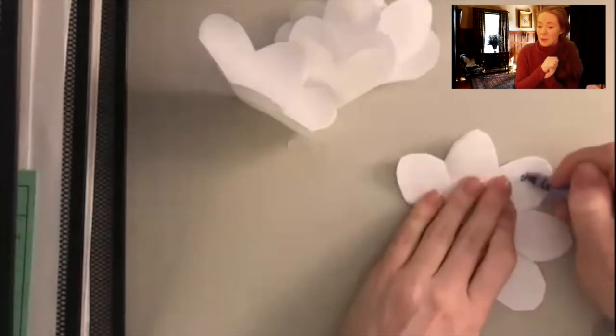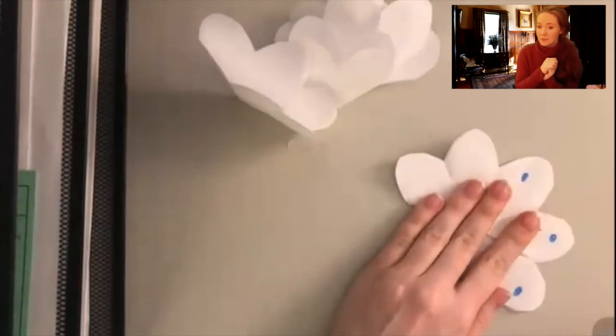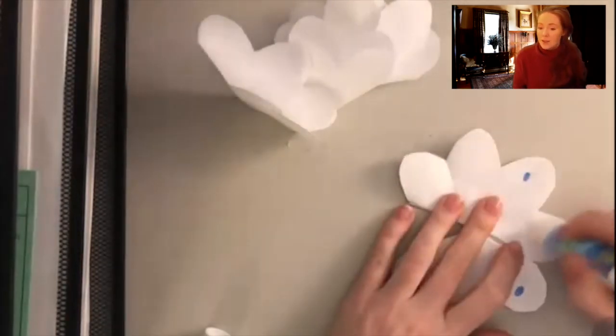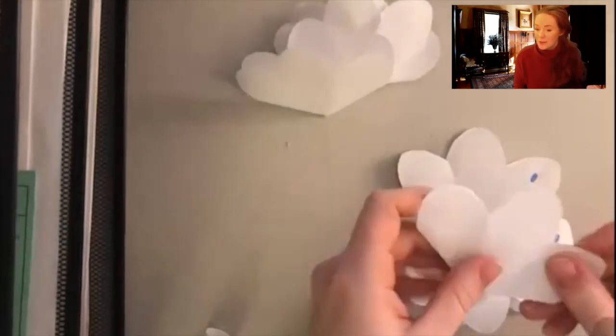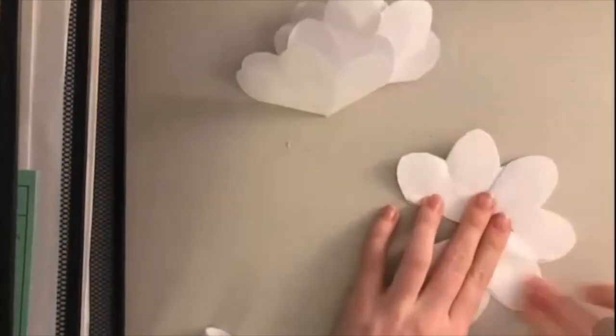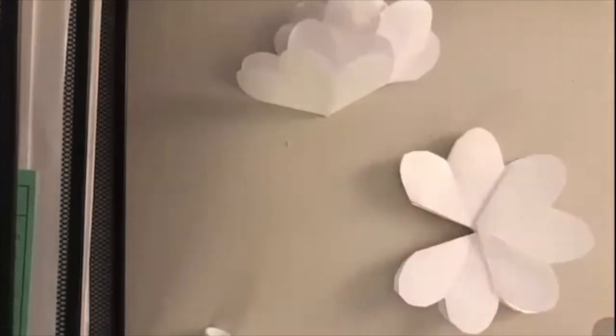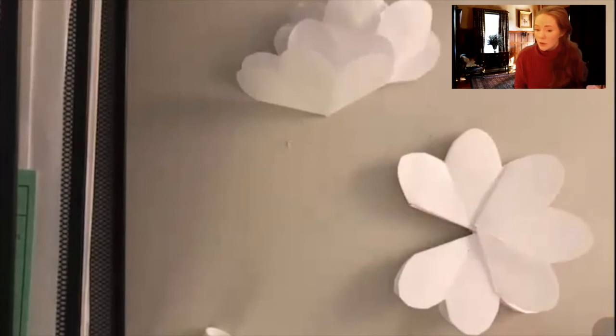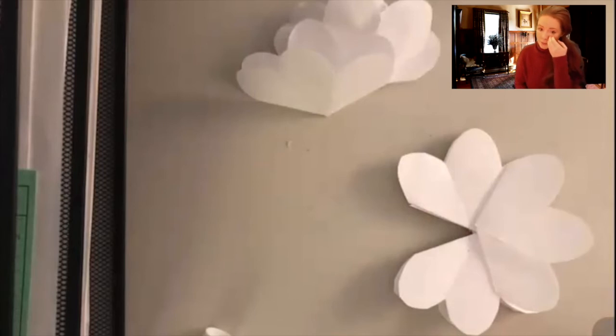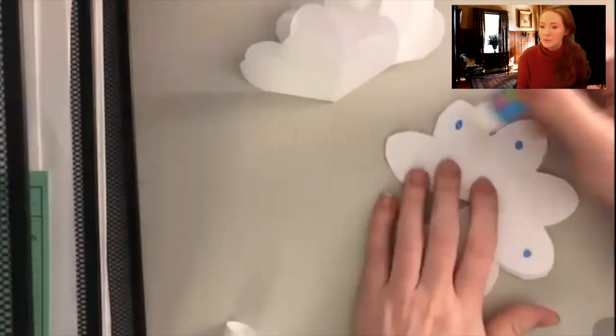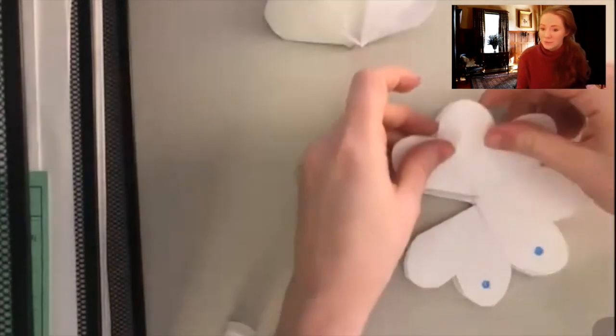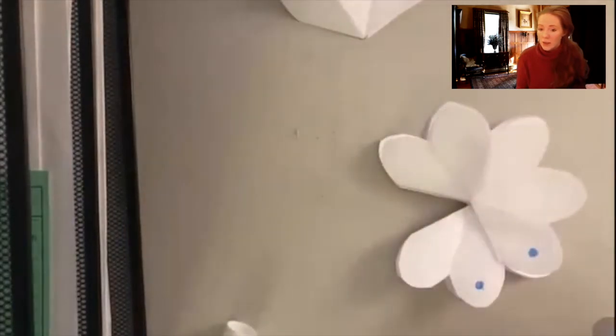We're going to do the three middle pieces and attach one petal to those three glue points. This one's a little weird. You're going to do two on the top diagonal and the two on the bottom diagonal, and you're going to use two petals here.